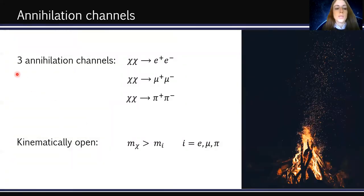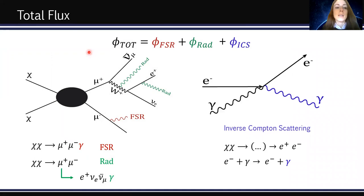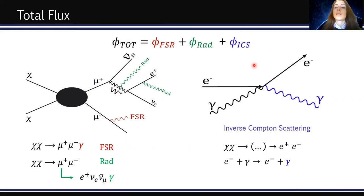In our analysis we focus on three annihilation channels: electron, muon, and pion. Each channel is kinematically open whenever the dark matter particle mass m-chi is above the mass of the electron, muon, or pion respectively. Considering two dark matter particles annihilating into muons: these muons can radiate a photon — final state radiation — or they can decay and the positron can radiate a photon — radiative decay emission. Final state radiation and radiative decay are the so-called prompt components. Then there are the secondary components, including inverse Compton scattering, which is the focus of our analysis.